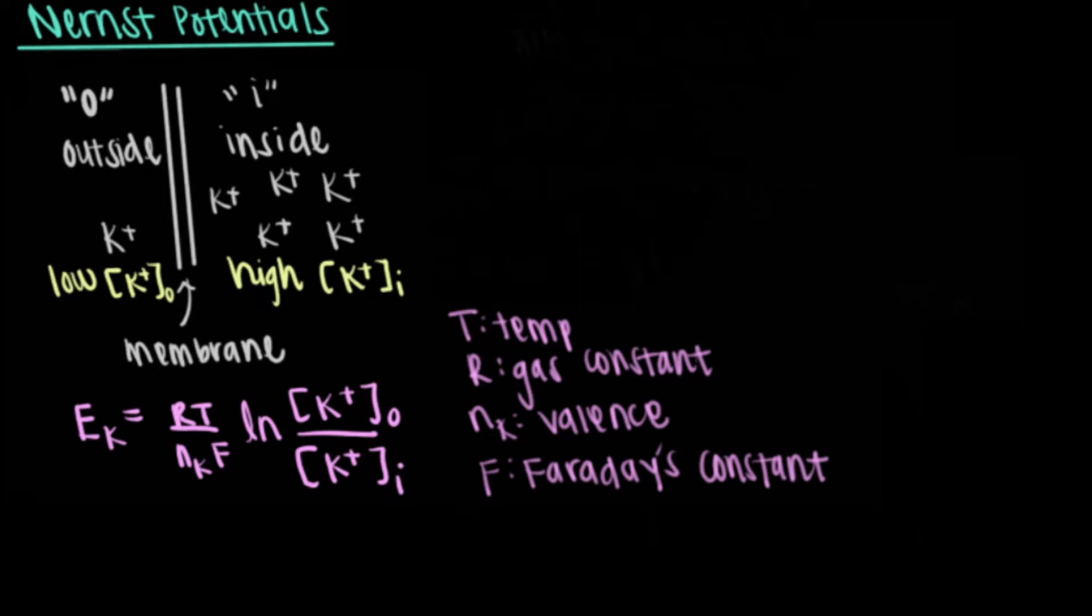Note that overall, the Nernst potential represents the difference between the inside and outside potentials of a single ion. You can only get a potential difference of ions that are permeable to the cell membrane. If the cell membrane won't allow a specific ion through, then its concentration ratio becomes zero divided by zero.